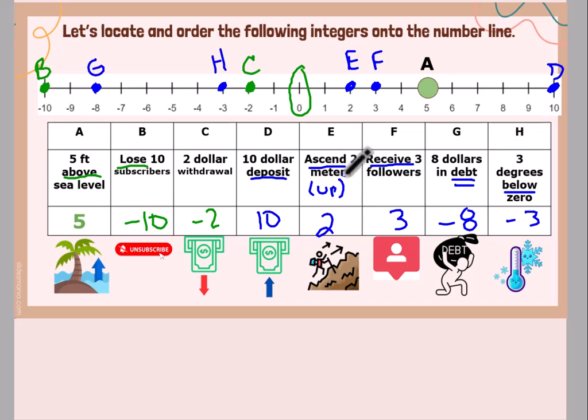Ascend 2 meters. So ascend and descend are some of the ones that can get confusing. When you descend, that means you're climbing down the stairs. You're going down. Descend, D, down, D. Ascend means you're climbing up the stairs. So if you're going up, it would be a positive 2. So I found 2 on my number line and I labeled it point E.